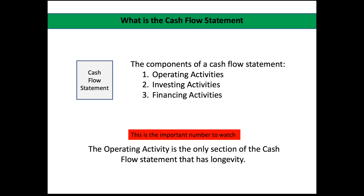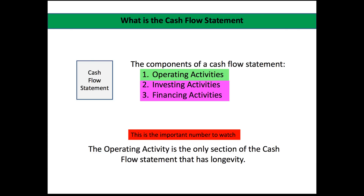The important number to watch across those three categories is really the operating activity — this is where you should see the green on the sheet. A positive number under operating activities is the true lifeblood of the company. If you see a positive number under investing activities, that actually means he sold some investments. If you see a positive number under financing activities, that means he has sold bonds and incurred debt — which is not a good thing. You want to see operating activities as a large positive number, and investing and financing activities as negatives — meaning he's either buying investments or paying off debt. The first one needs to be positive and the second two need to be negative.